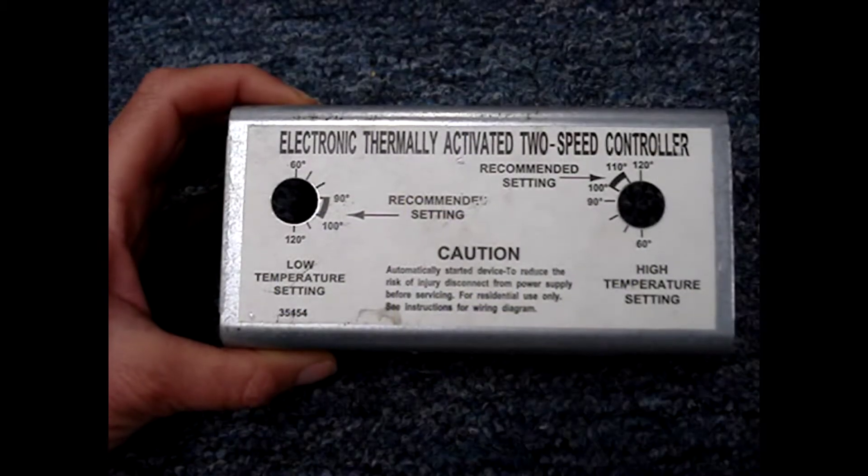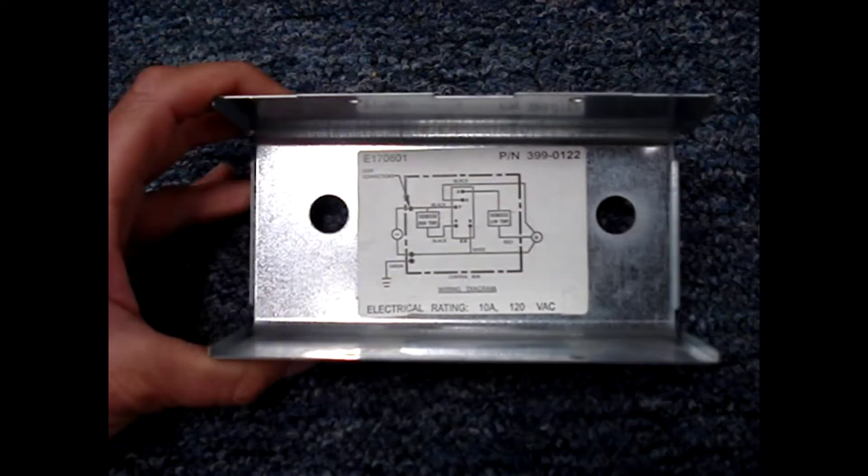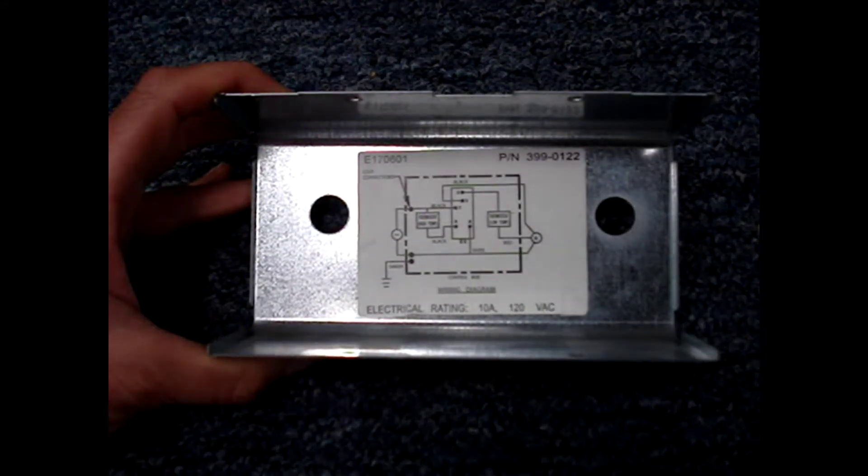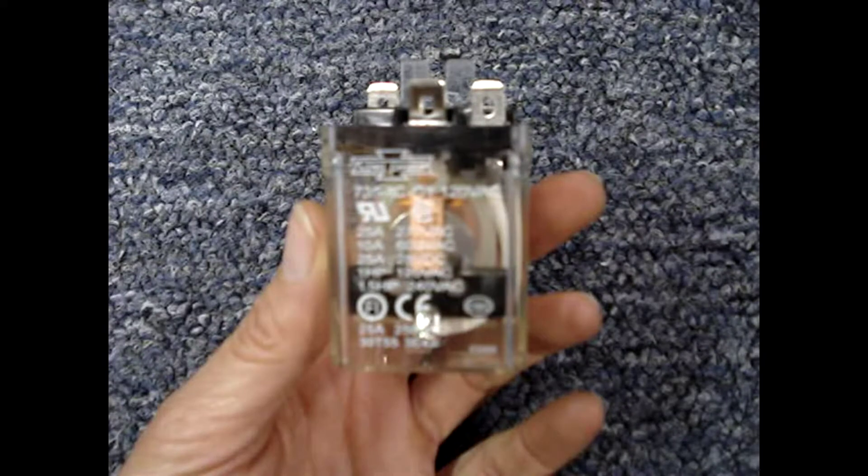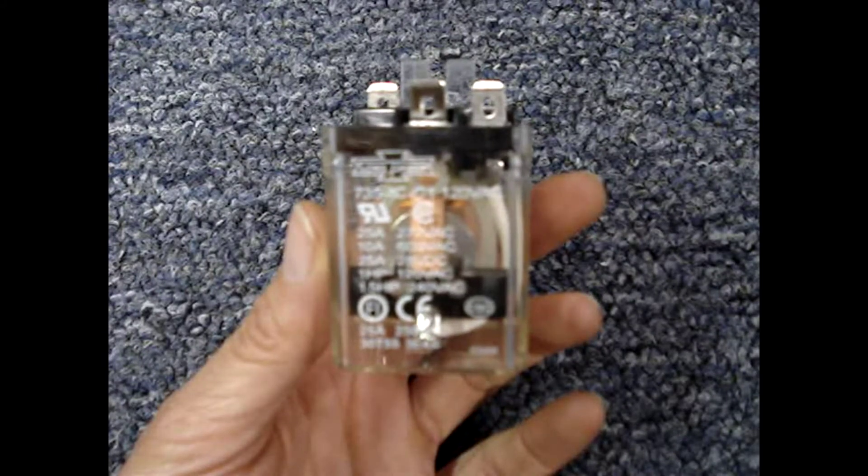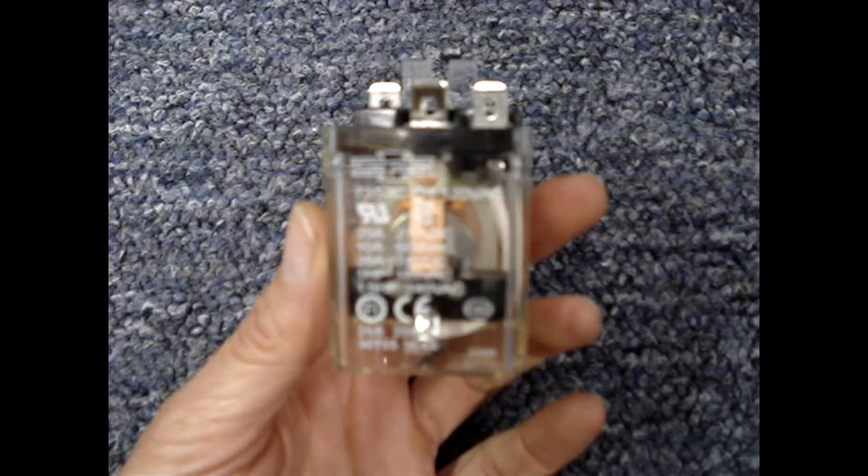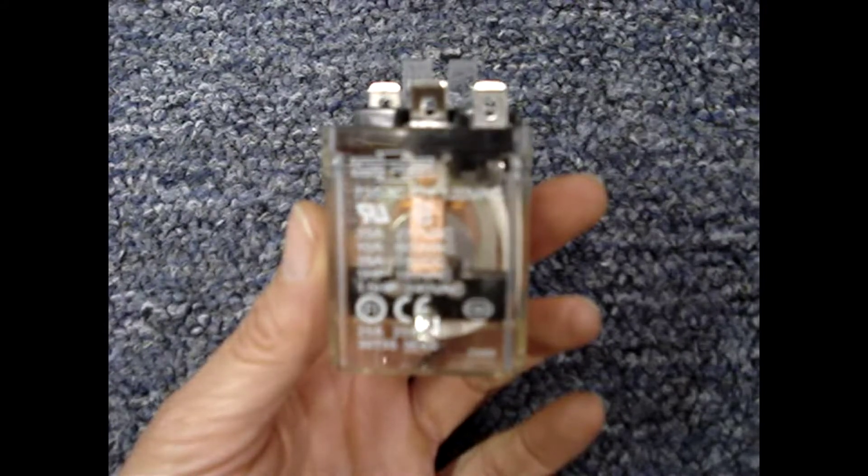Check behind the cover of whatever you're working on and it's likely you'll find a wiring diagram. A lot of relays will have the pinouts for the coil and the contacts printed on them. This one doesn't.